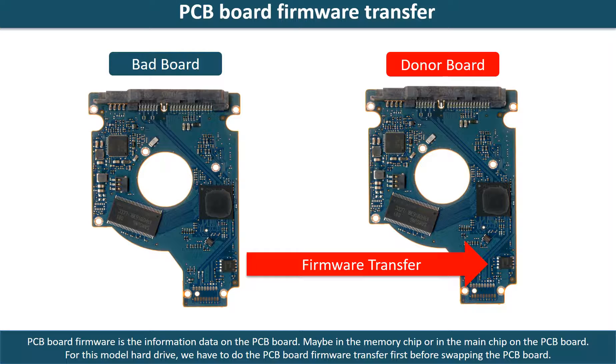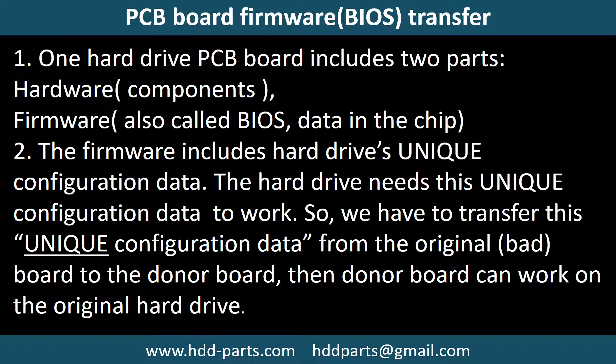PCB board firmware is the information data on the PCB board. It may be in the memory chip or in the main chip on the PCB board. For this model hard drive, we have to do the PCB board firmware transfer first, then swap the PCB board. Otherwise, the new board will not work on the original hard drive. This is because one PCB board includes two parts: hardware and firmware. The PCB board firmware includes the hard drive's unique configuration data, which the hard drive needs to work. So we have to transfer this unique configuration data from the original board to the donor board so the donor board can work on the original hard drive.